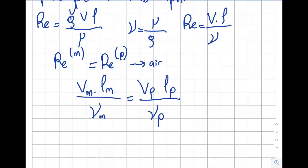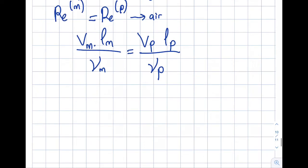Rearranging to find V model: Vm equals Vp times—I prefer to write it this way—Lp divided by Lm times kinematic viscosity of model divided by kinematic viscosity of prototype.